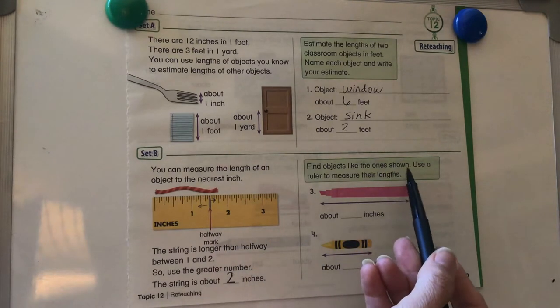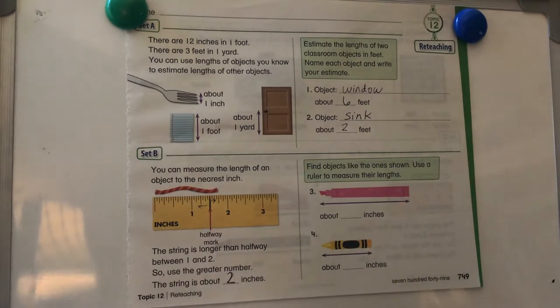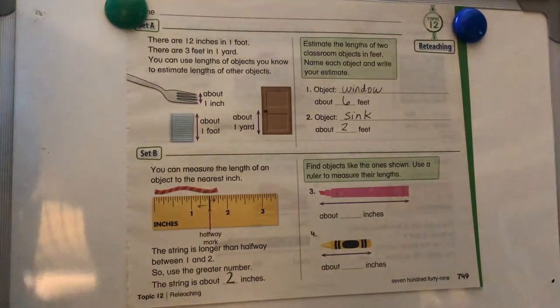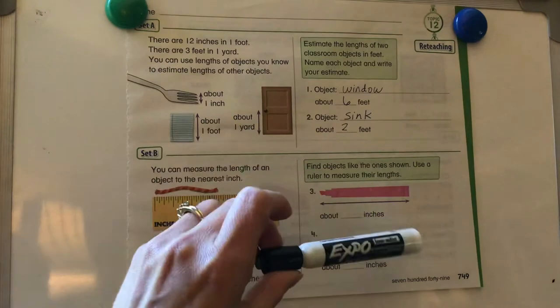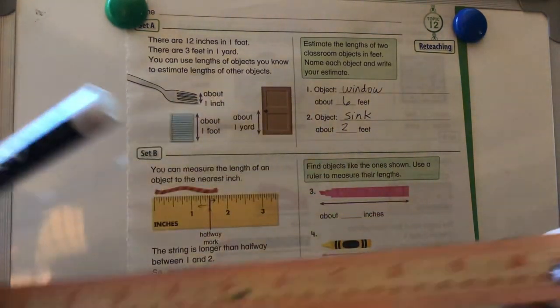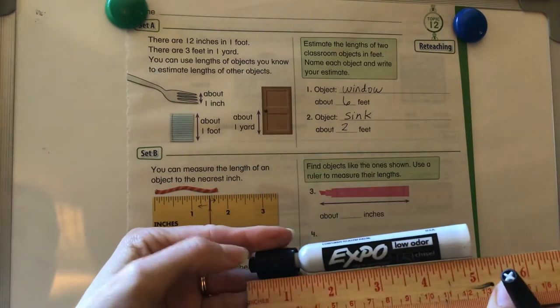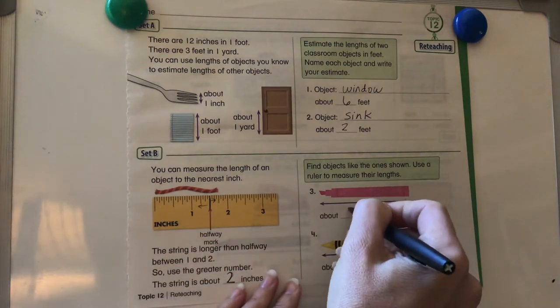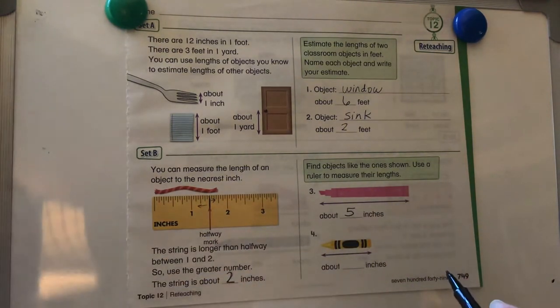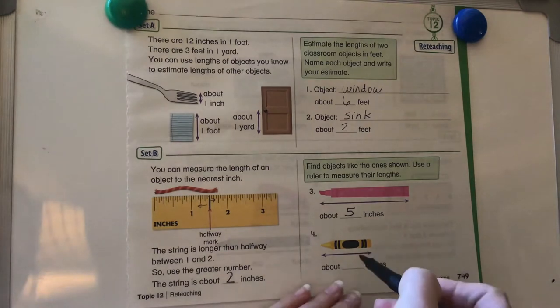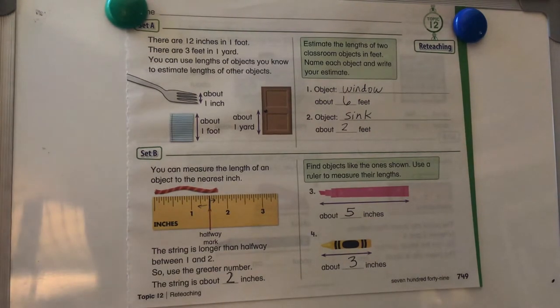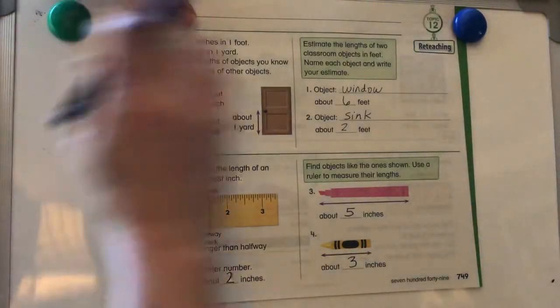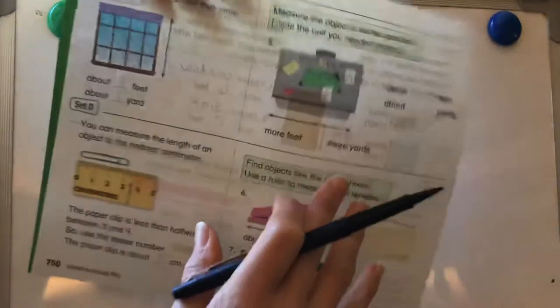Find objects like the one shown. Use a ruler to measure their lengths. So right here I have a marker. And the marker in inches is about five inches. And my crayon is about three inches. And again, they may be different lengths at your house, but those are just the objects that I'm measuring.